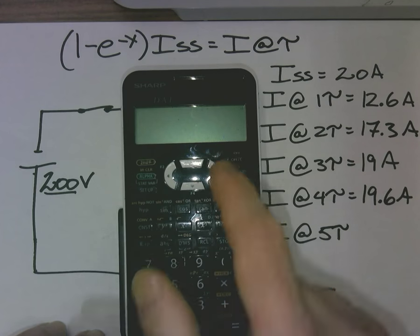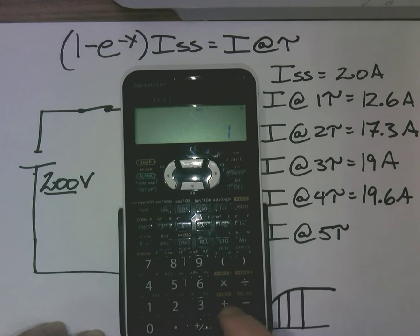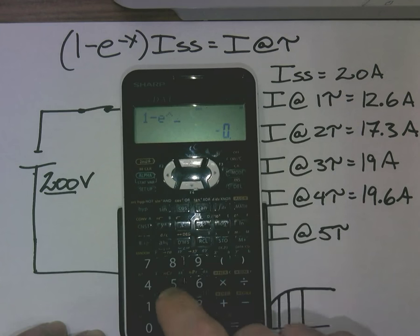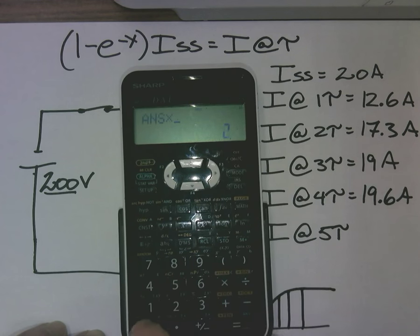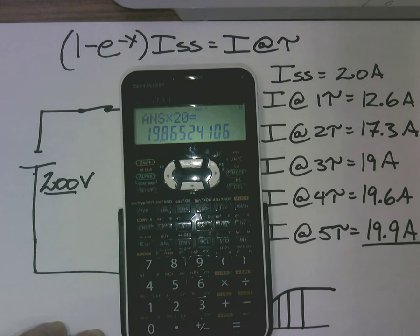And let's take it all the way home. 1 minus second function e to the negative 5 equals times 20 gives me 19.9 amps. And for all intents and purposes, we'll call that 100%. 20 amps, we could call that.